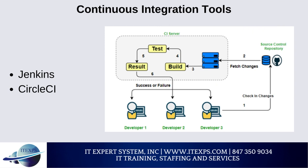Jenkins is an open-source automation tool that provides plugins to help develop, deploy, and deliver software. It is a server that lets developers distribute tasks across various machines and perform distributed tests and deployments. The Jenkins Pipeline offers several plugins to facilitate the implementation of a continuous integration pipeline.